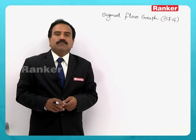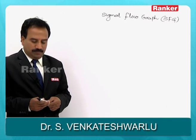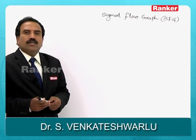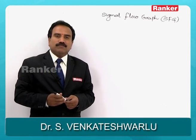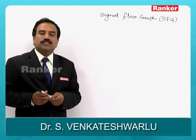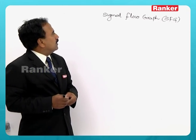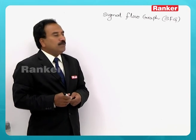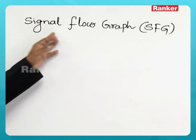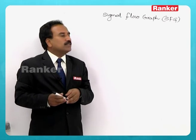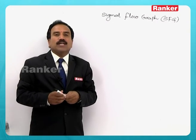Signal flow graph is the next topic in control systems. The name itself is very clear — it is a graphical representation of a system, and there will be a signal flow from input to output. That is why it is called a signal flow graph.